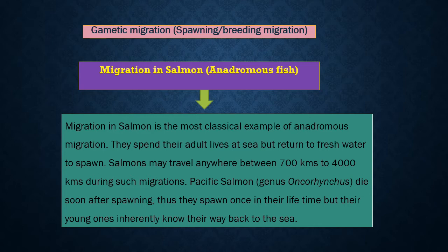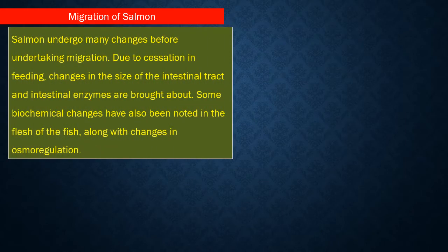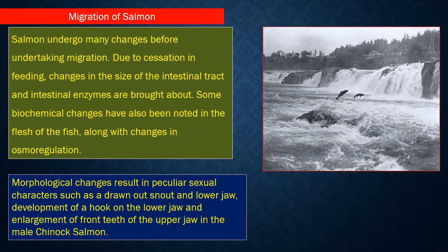Salmons may travel anywhere between 700 km to 4,000 km during migration. Pacific salmon die soon after spawning, thus they spawn only once in their lifetime, but their young ones inherently know their way back to the sea. Salmons undergo many changes before undertaking migration: changes in the size of the intestinal tract and enzymes, biochemical changes in the flesh, and changes in osmoregulation. Morphological changes include development of a drawn-out snout and lower jaw, a hook on the lower jaw, and enlargement of front teeth of the upper jaw in the male chinook salmon.